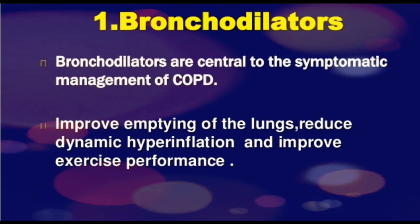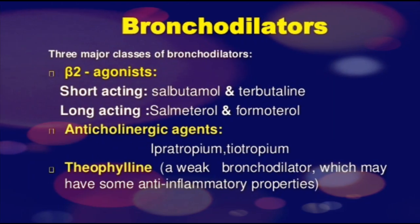Management involves the use of bronchodilators, which have three major classes. Beta-2 agonists can be short-acting — including salbutamol and terbutaline — or long-acting, including salmeterol and formoterol. Anticholinergic agents include ipratropium and tiotropium. Theophylline is a weak bronchodilator but has some anti-inflammatory properties.